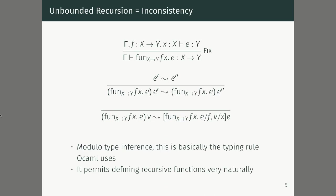If we added looping to the simply typed lambda calculus naively, you could write any Turing-complete program, but it would actually end up destroying the logical interpretation of the simply typed lambda calculus. On the slide: unbounded recursion equals inconsistency.